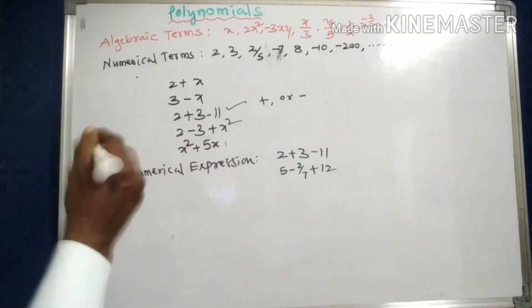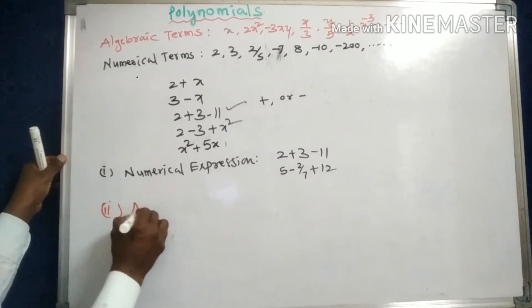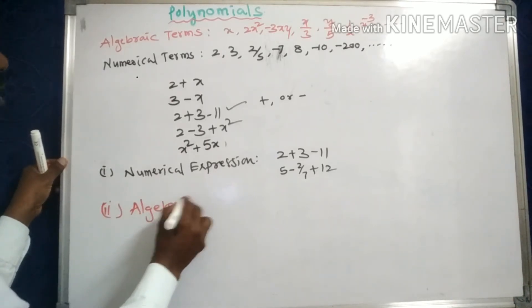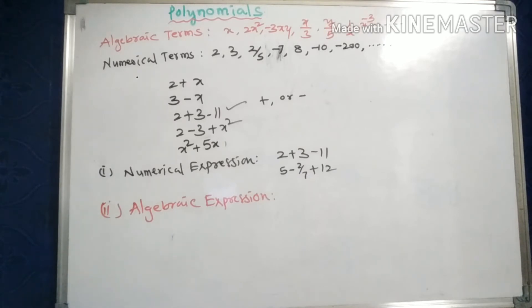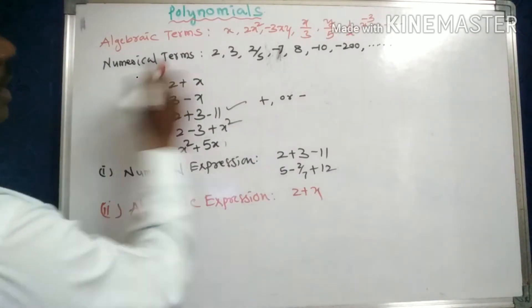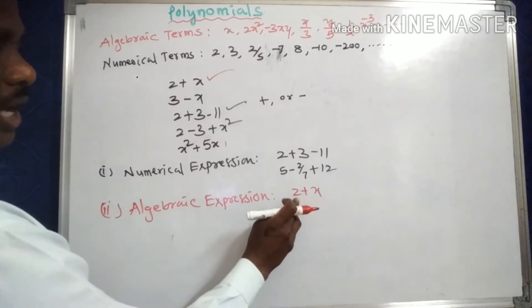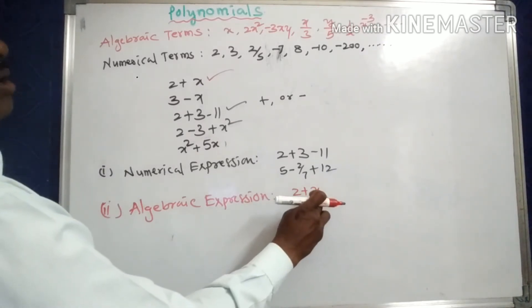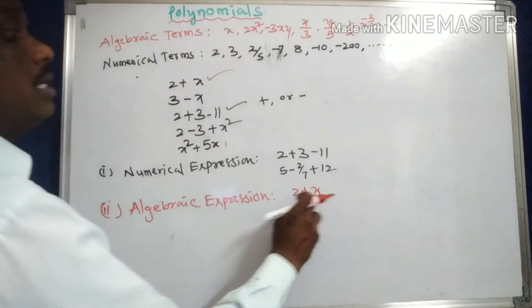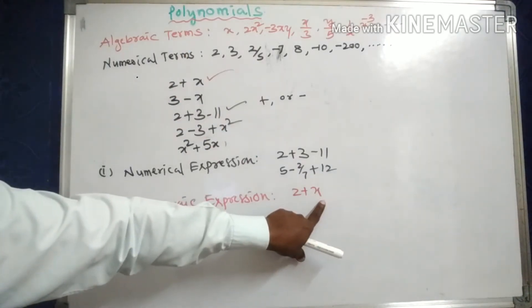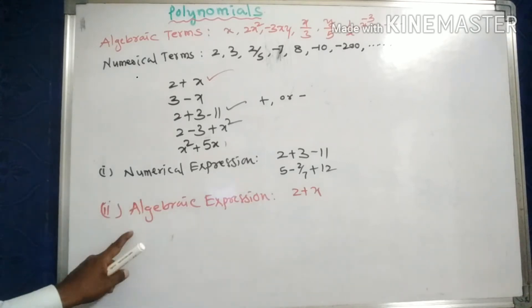Next, what about an algebraic expression? An algebraic expression is one which has at least one algebraic term. For example, 2 plus x — here 2 is a numerical term and x is an algebraic term. Since it has at least one algebraic term, it is called an algebraic expression.